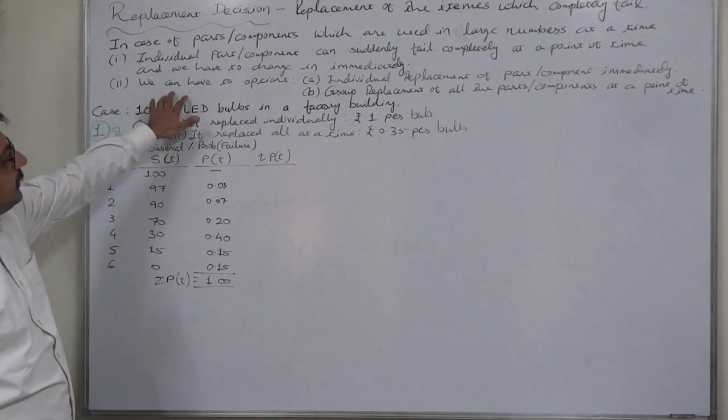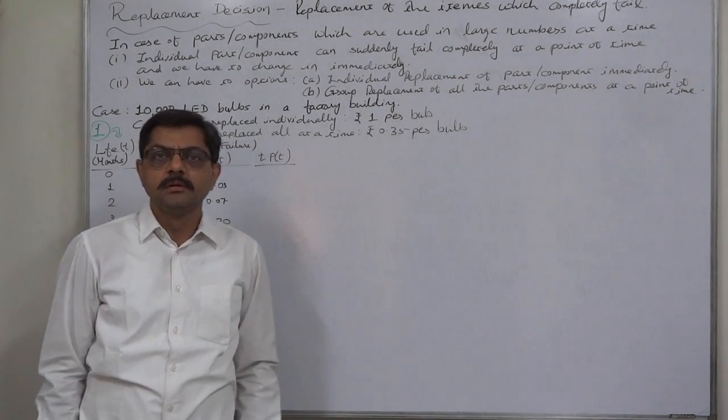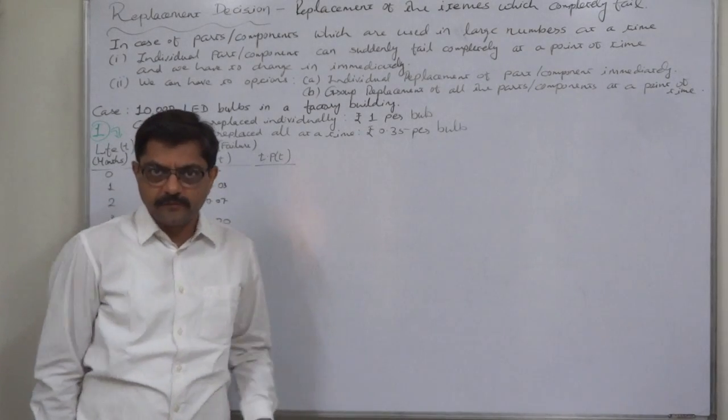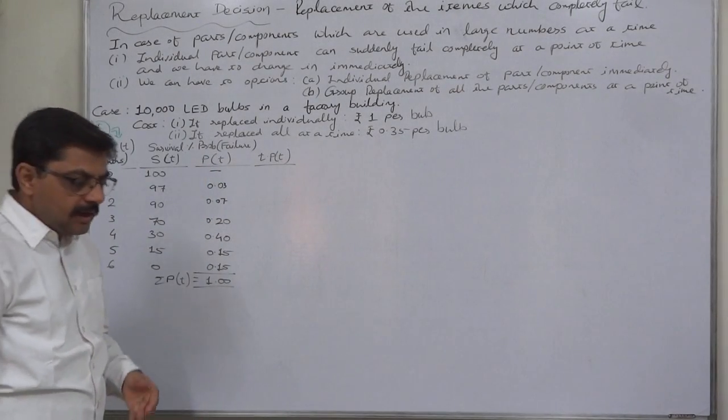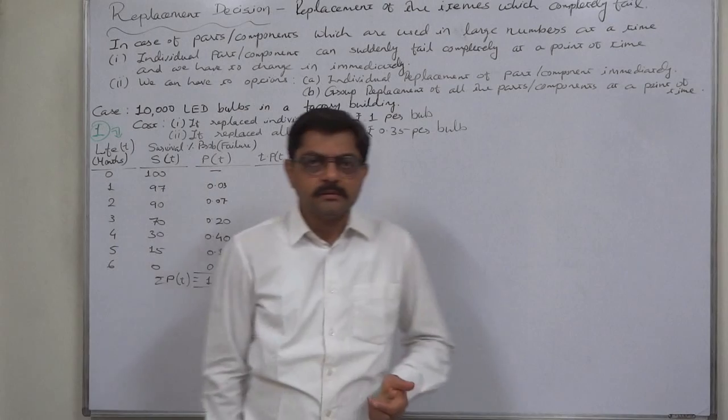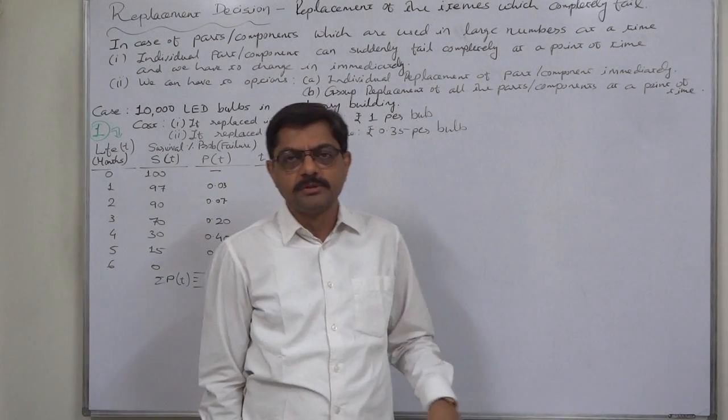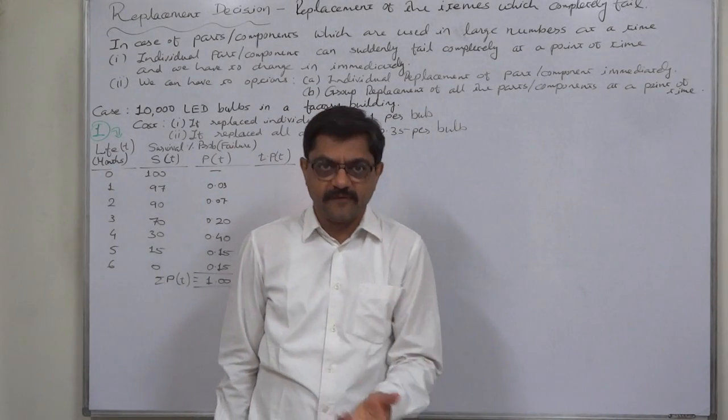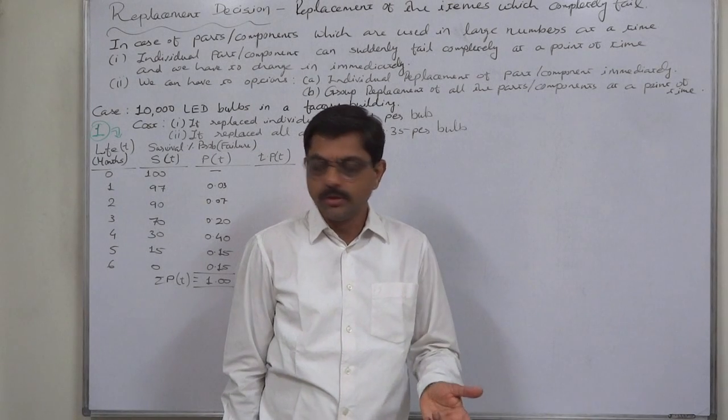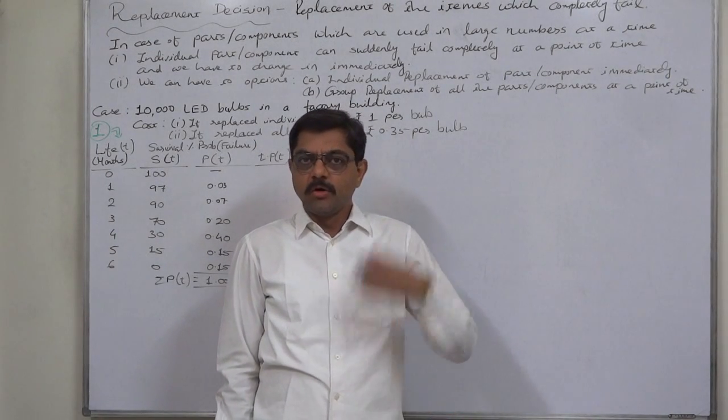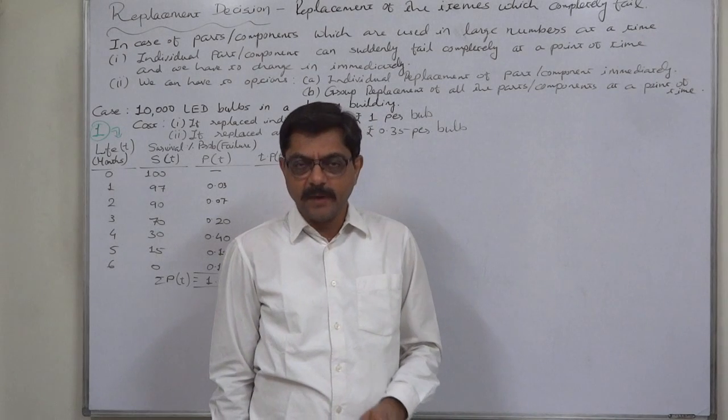For example, in a factory building, there are 10,000 LED bulbs for the purpose of better lighting. It is not possible that all 10,000 bulbs have the same life, the same longevity. They all will have different life spans.